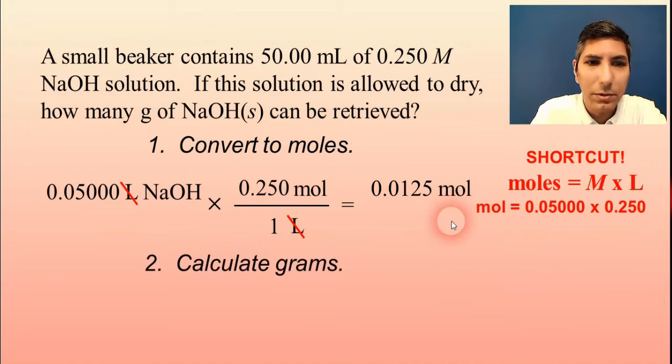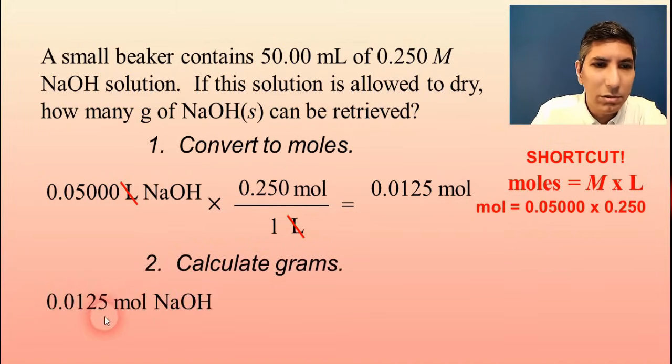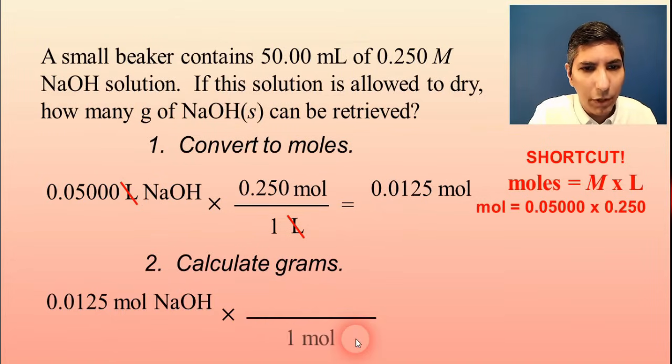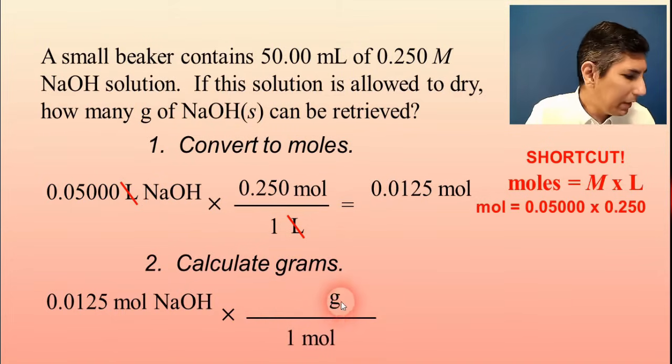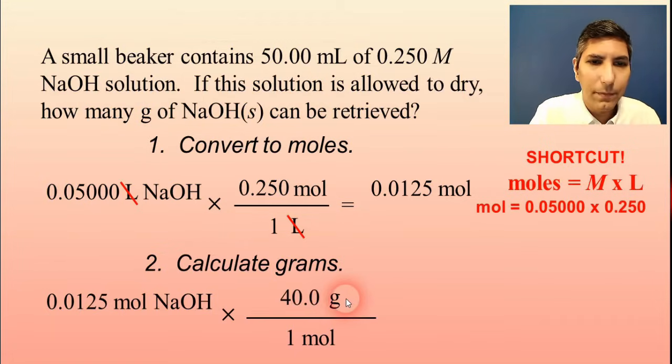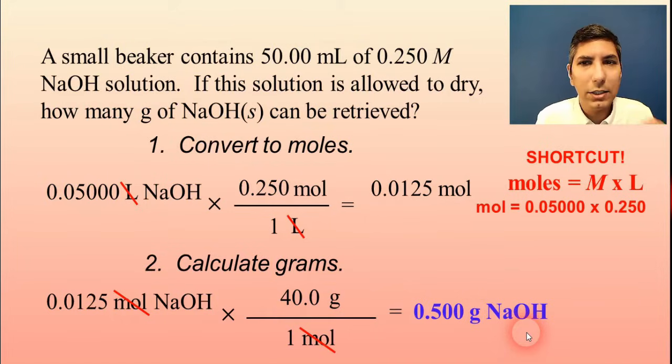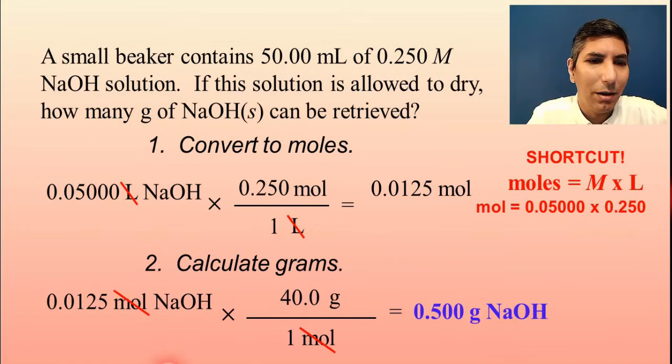Now, once we have moles, we can convert to grams. And we just take the 0.0125 moles of sodium hydroxide, and we're going to convert that to grams. And, of course, we use our periodic table for that. So moles on the bottom, grams on top. And when you add these together, it's about 40 grams per mole of this substance. So when you cancel moles and multiply, 0.0125 times 40 gets us about 0.500 grams of sodium hydroxide. So if you take that solution and allow it to dry out, you can expect to retrieve about half a gram of sodium hydroxide solid. That's how you would solve that. It's just using the definition of molarity.